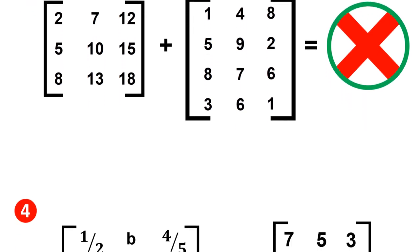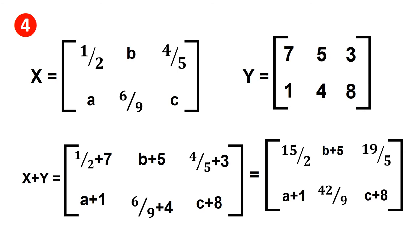For the fourth application, both matrices have two rows and three columns, so they are in the same order. In the first row: 1/2 + 7 = 15/2, b + 5, and 4/5 + 3 = 19/5. In the second row: a + 1, 6/9 + 4 = 42/9, and c + 1.